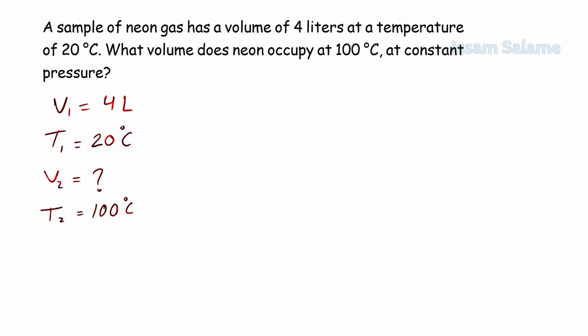As we mentioned before, when we use gas laws, temperature should be in Kelvin. To convert degrees Celsius to Kelvin, we add 273. So initial temperature is going to equal 293 Kelvin, and final temperature is going to equal 373 Kelvin.